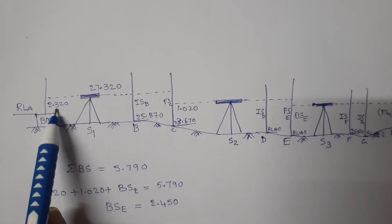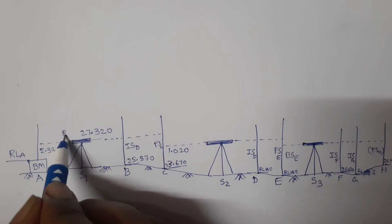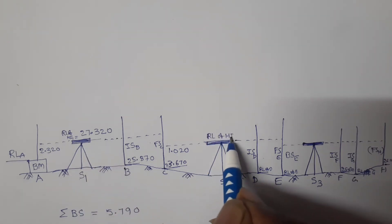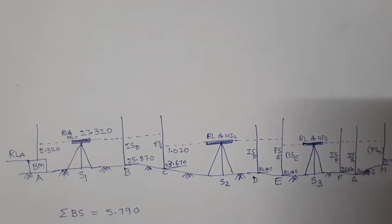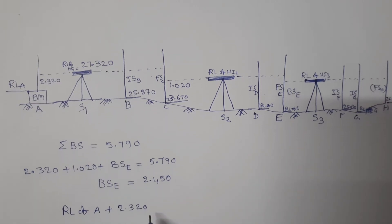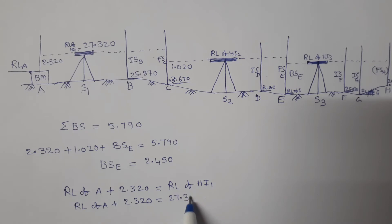RL of A plus back sight reading is equal to RL of height of instrument at setting position 1. So RL of HI1 is equal to 27.320. RL of A plus 2.320 is equal to 27.320. Therefore, RL of A is equal to 25.000 meters.